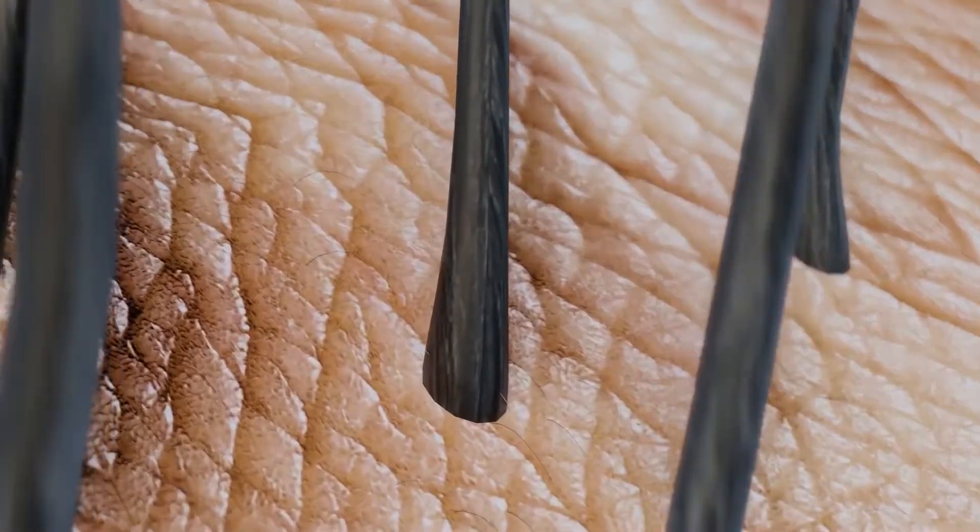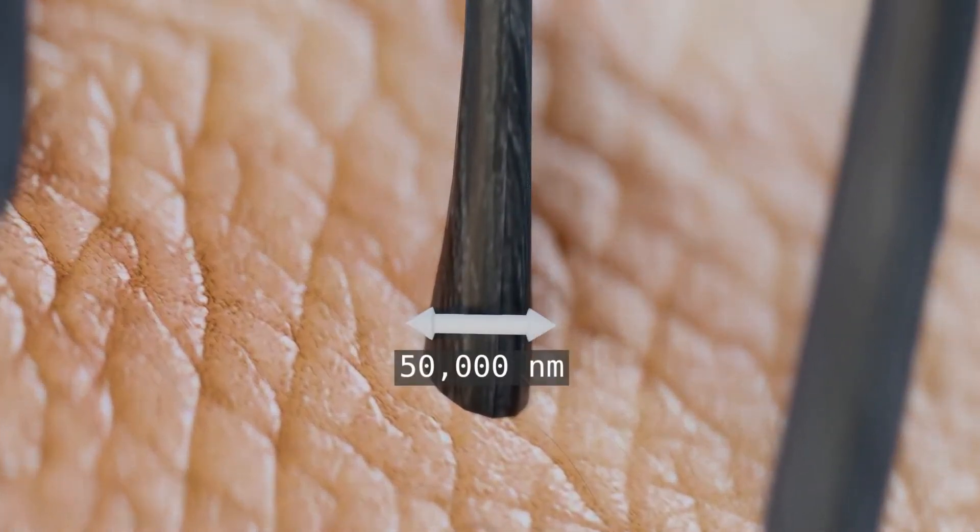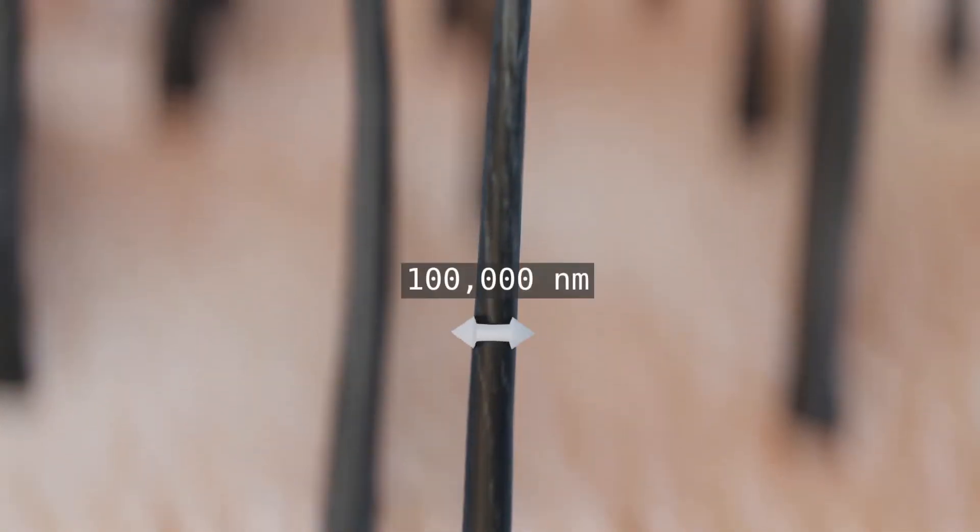For comparison, the human hair is between 50,000 to 100,000 nanometers thick.